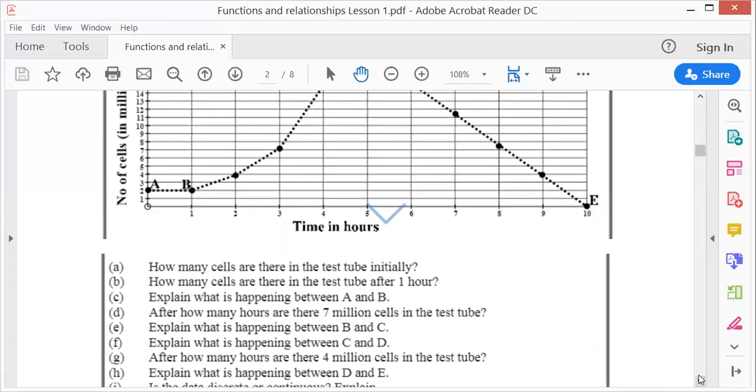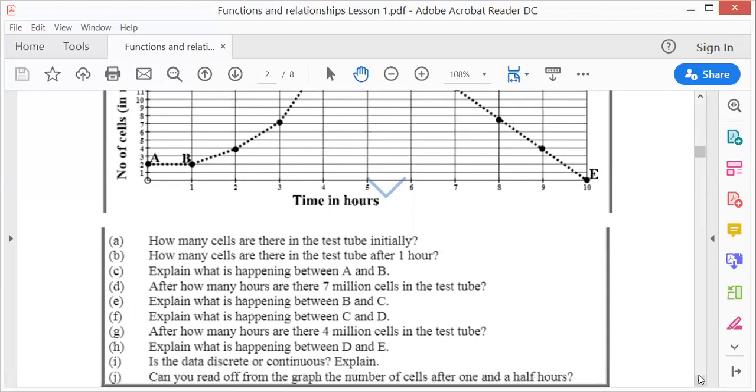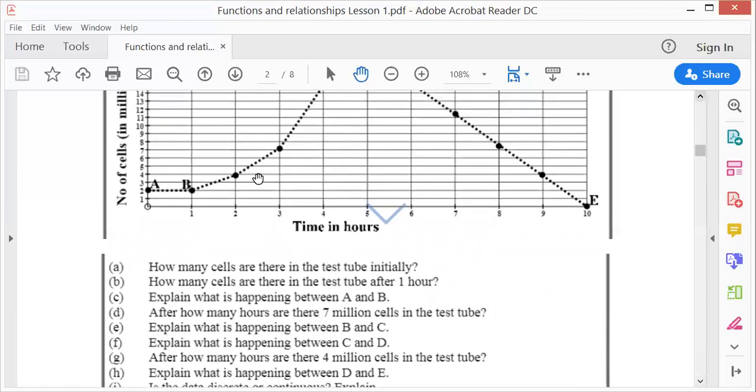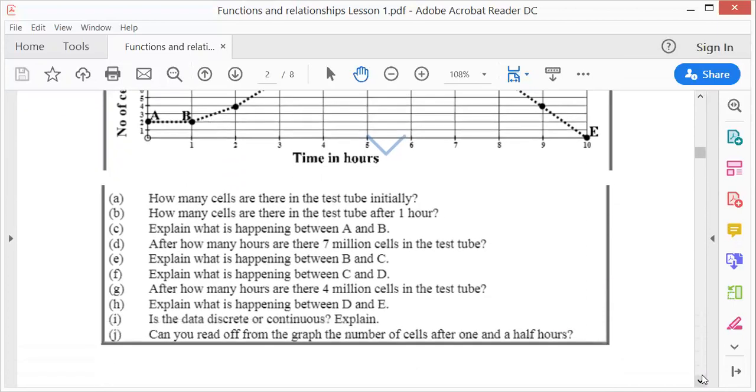Is the data discrete or continuous? It's discrete because we have dots. Can you read off from the graph the number after one and a half hours? It will be difficult because they took measurements every hour, so it's difficult to get an exact answer. You can judge more or less, maybe approximately 3 million, but you can't say exactly, you have to say approximately.